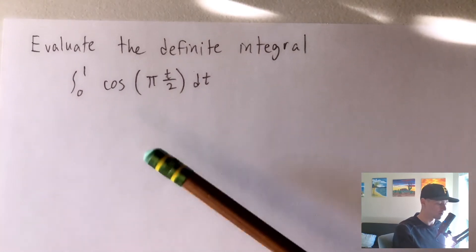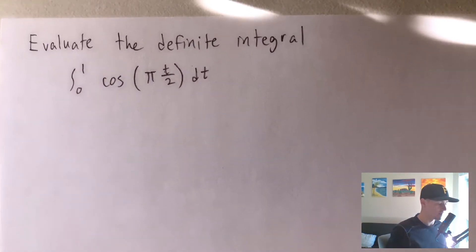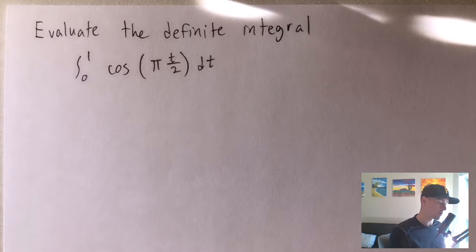Evaluate the definite integral, and the integral we're going to evaluate is the integral from 0 to 1 of cosine of pi times t over 2, dt.